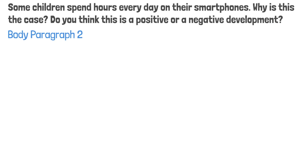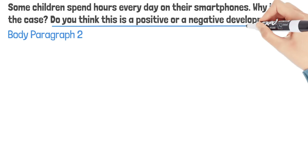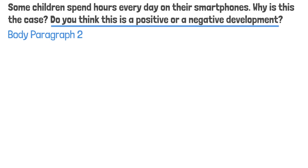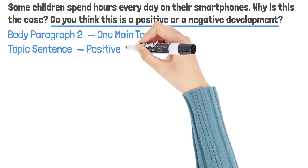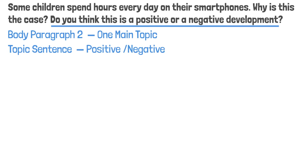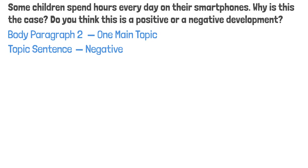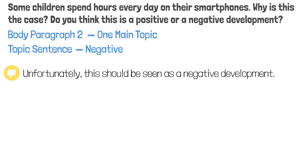Now let's move on to body paragraph 2, in which we will answer the second question: 'Do you think this is a positive or a negative development?' Again, in order for the paragraph to have only one topic, it's best to choose only one side to discuss — we say it's either positive or negative. Otherwise the paragraph will have two topics. So I think this is a negative development. But our topic sentence shouldn't be just something like 'unfortunately, this should be seen as a negative development.' We need to come up with a reason why this is a negative development.